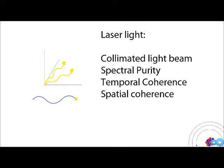Collimated light beam means that all the rays are parallel, spectral purity means that they are of the same wavelength, and temporal and spatial coherence I'll try to explain in the next slide.